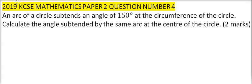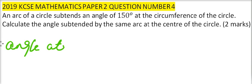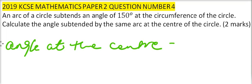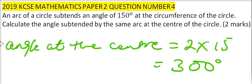Calculate the angle sustained by the same arc at the center of the circle. The angle at the center is equal to 2 multiplied by 150, which gives you 300 degrees. That's how you work out that question and you get yourself 2 marks.